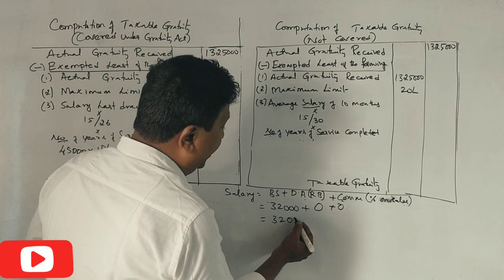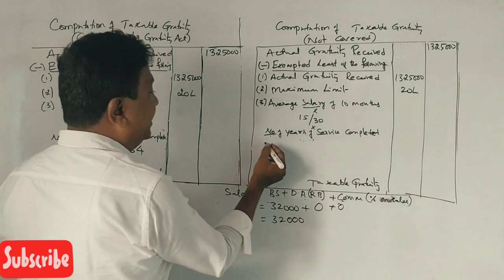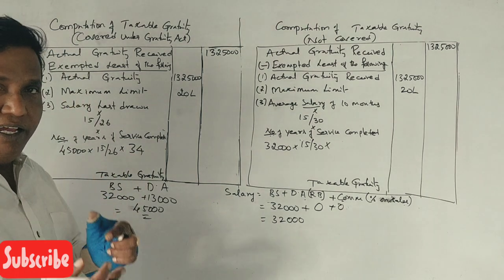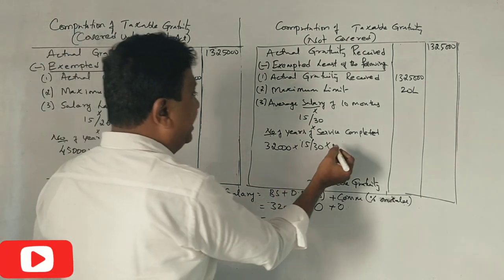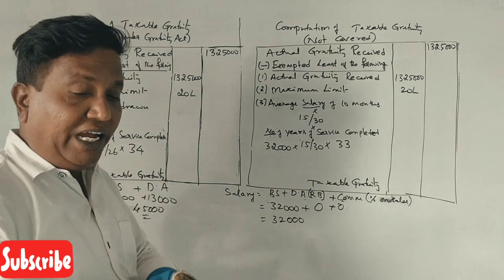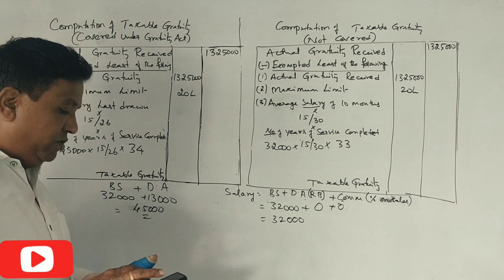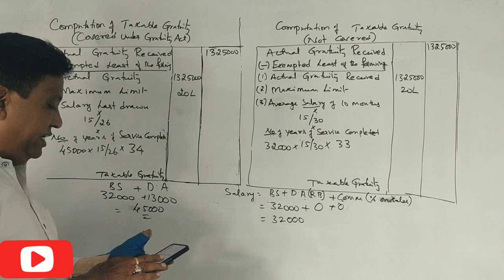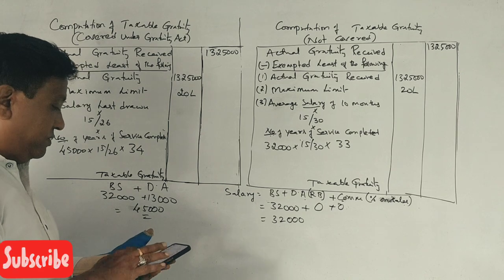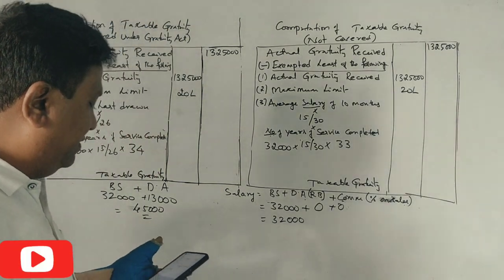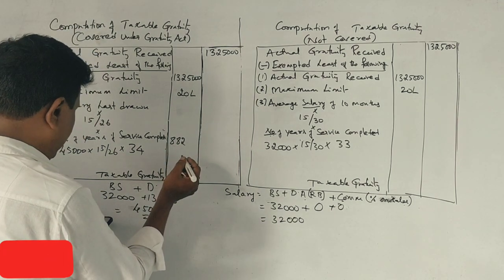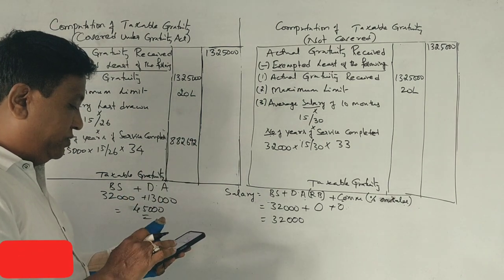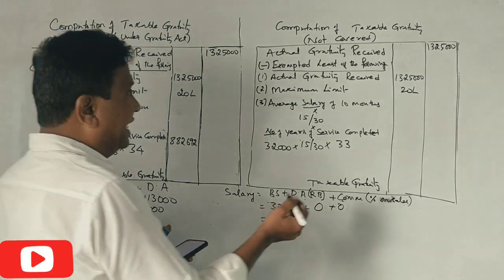Now, half month's salary for 33 years, 9 months. So this is the calculation. Divide by 2 into 33. So that is 5,28,000.